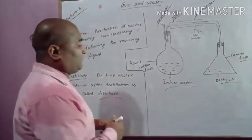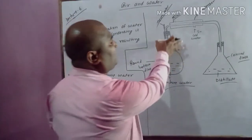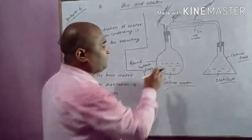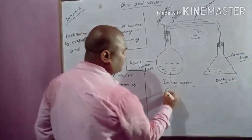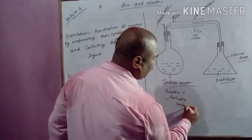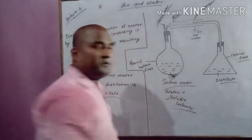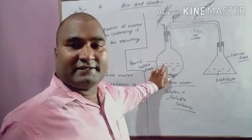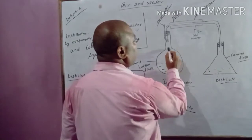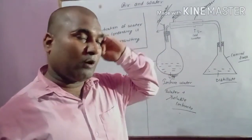How is distillation done? See here, this is the setup for distillation. There is a round bottom flask — a glass container with a round bottom — in which we have taken impure water, meaning water plus soluble impurity. I start heating it. When you heat it, the water gets evaporated and converted into water vapor. Since it is a gas, it starts rising up. This is the thermometer, which tells us the temperature inside the round bottom flask.